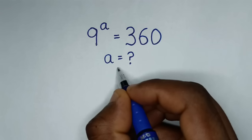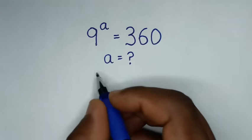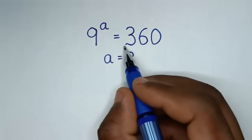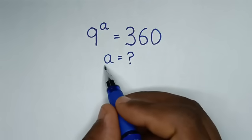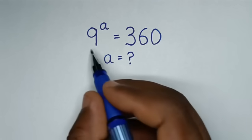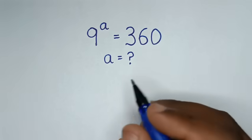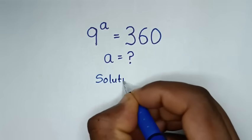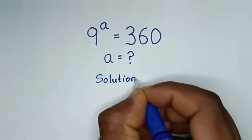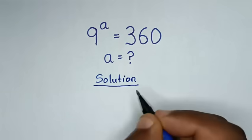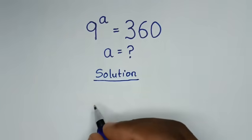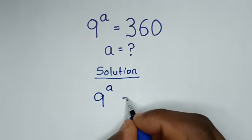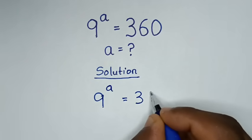Hello, you are welcome to solve this math problem which is 9 power a is equal to 360, to find the value of a from this equation. Solution: from this our problem, which is 9 power of a is equal to 360.